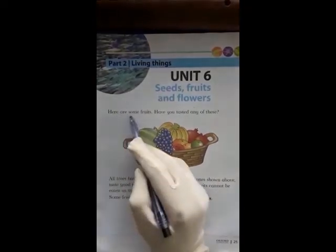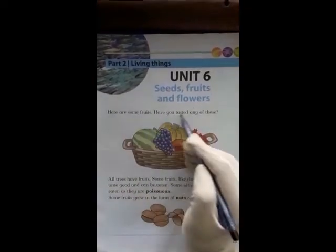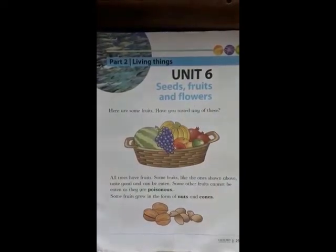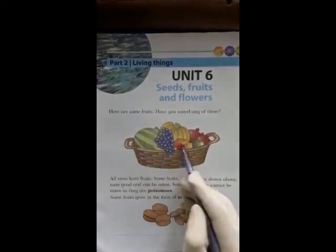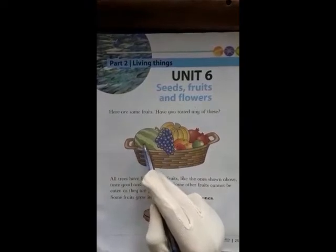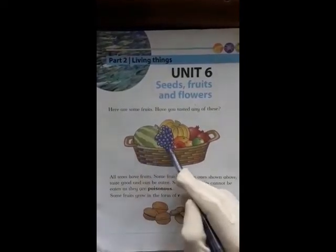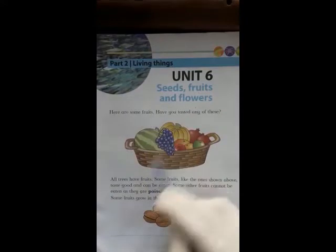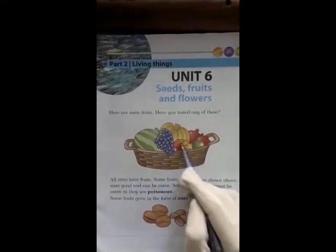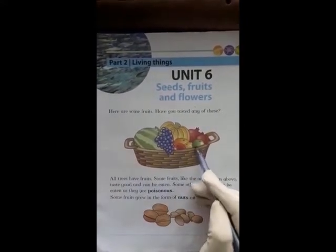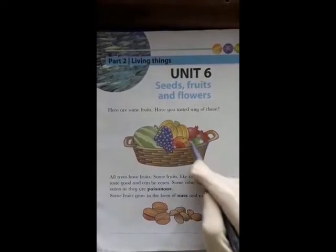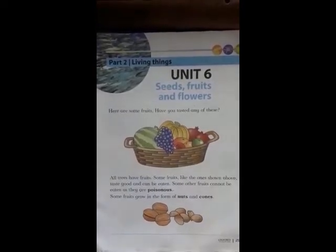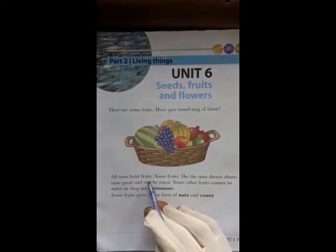Here are some fruits. Have you tasted any of these? Can you name these fruits? This is a watermelon. These are grapes. These are bananas. These are oranges. This is an apple. And these are pomegranate. All trees have fruits.